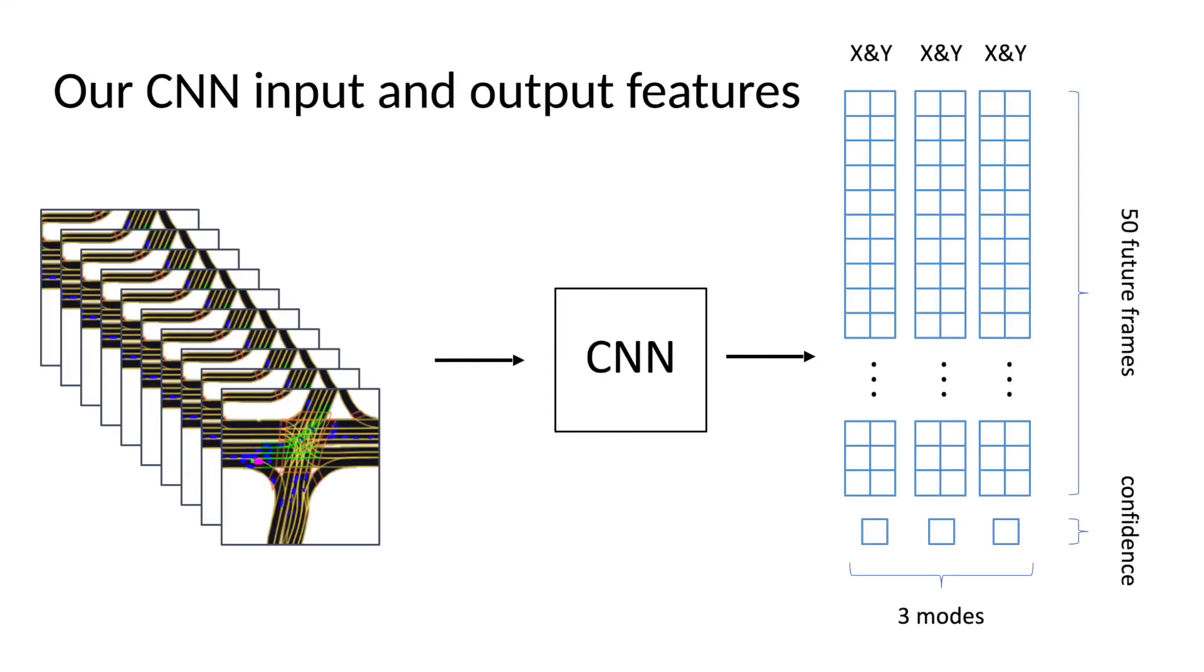In our particular CNN, we will take 10 historical rasterized frames as input and pass it into the CNN. The CNN will then predict three future paths. Each path will have a confidence score and 50 future X and Y coordinates. This means the final output layer has 303 features. Giving the CNN multiple frames as input will give the model some temporal information about the scene, so that it can tell which direction the cars are already moving in.